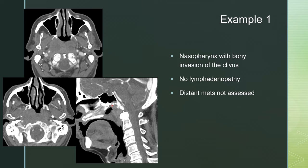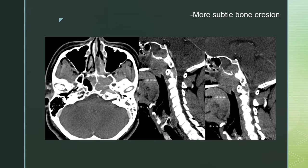On this case, the size of the mass is not included in the T staging — it's really where the mass extends and what structures are invaded. This is a nasopharyngeal mass with bony invasion of the clivus. There is no lymphadenopathy, and distant metastases were not assessed on CT. So, if we were going to stage this mass, this would be T3N0MX.